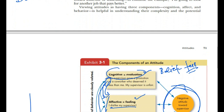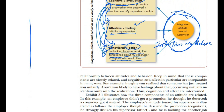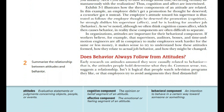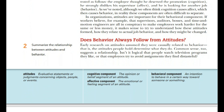Looking at these components helps us understand the complexity and the potential relationship created between attitude and behavior. The three components interrelate and affect each other. That is about attitude. One very important question is: does behavior always follow from attitude? Research indicates that attitudes are assumed to be causally related to behavior.